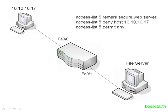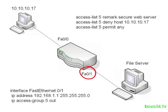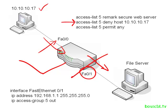Looking at our diagram, we configure the access list on the router and apply it on the interface closest to the file server — that's our destination. We use 'ip access-group 5 out', meaning we compare packets going out the interface towards the file server. If we applied it on FA0/0 inbound instead, then no matter where our host was trying to go, it would always be denied — which is not our intention. We only want to block it from exiting the interface toward the file server.